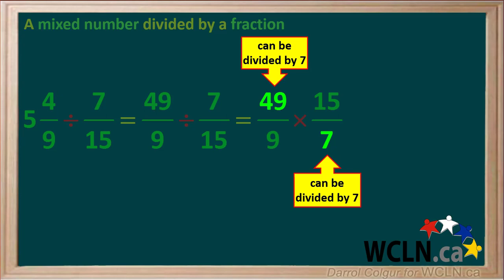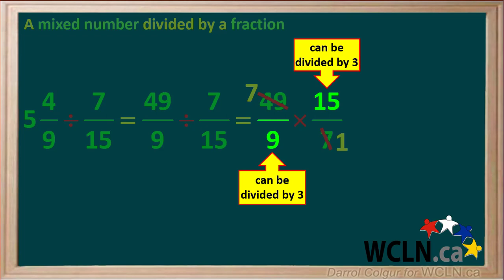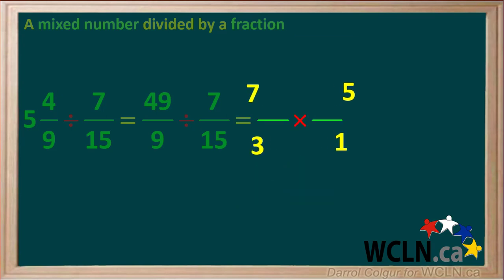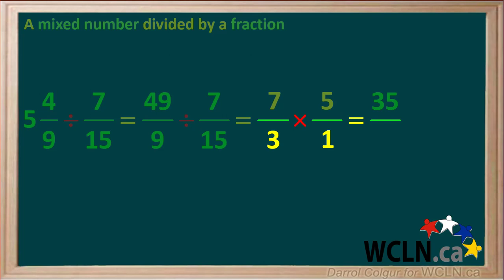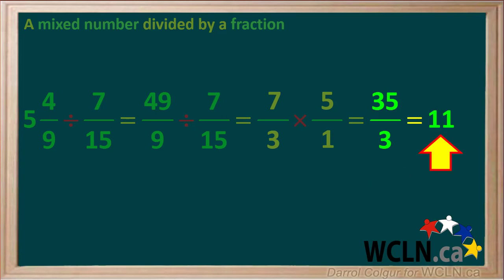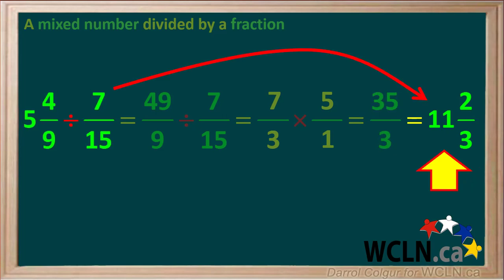Notice the diagonal numbers 49 and 7 can both be divided by 7: 49 divided by 7 is 7, and 7 divided by 7 equals 1. Also notice that the other diagonals, 9 and 15, can both be divided by 3: 9 divided by 3 gives us 3, and 15 divided by 3 is equal to 5. So we're left with the expression 7 over 3 times 5 over 1. Multiplying the numerators, 7 times 5 gives us 35, and multiplying the denominators, 3 times 1 gives us 3. So we're left with the improper fraction 35 over 3, which we need to convert to a mixed number. 3 goes into 35 eleven times; 3 times 11 is 33. The remainder is 35 minus 33, which is 2 thirds. So the final answer for 5 and 4 ninths divided by 7 fifteenths is 11 and 2 thirds.